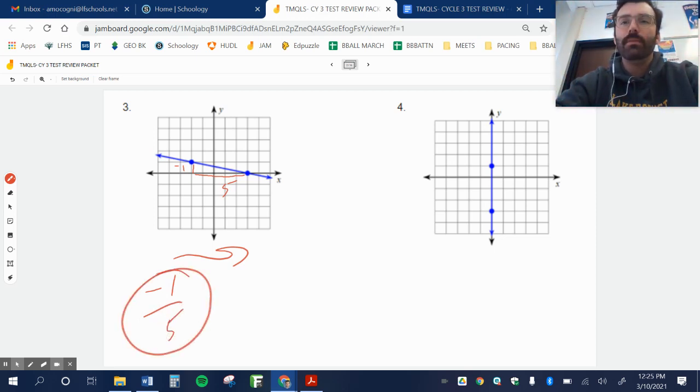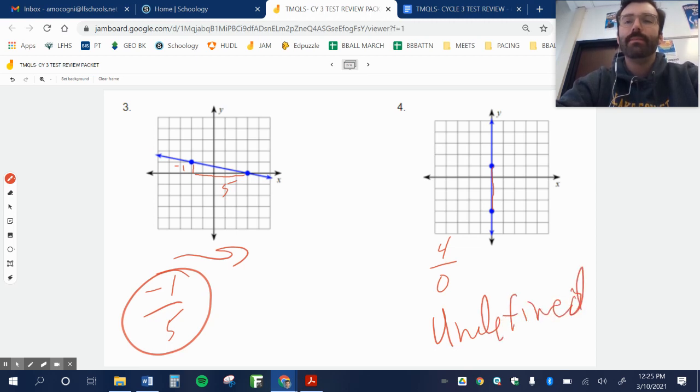And here, it looks like I'm just going up. I'm going up one, two, three, four. So it's four over zero, which is undefined. Remember that any time it's a vertical line like this, your slope is going to be undefined.